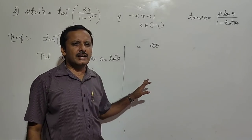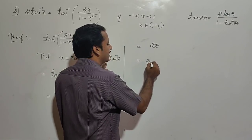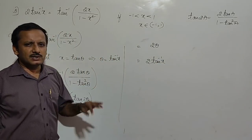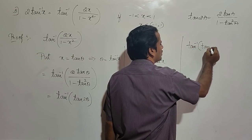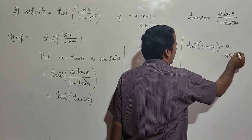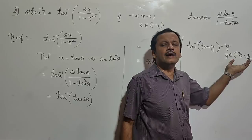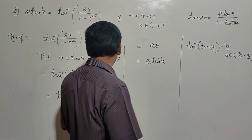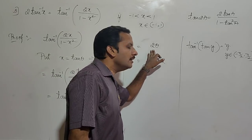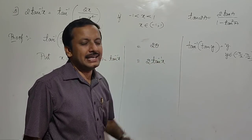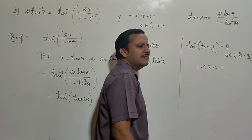Tan⁻¹(tan 2θ) = 2θ. However, the formula tan⁻¹(tan y) = y holds only when y belongs to the open interval (-π/2, π/2). So we must check that 2θ lies in this interval. Given x ∈ (-1, 1), we apply tan⁻¹ to get -π/4 < tan⁻¹(x) < π/4, meaning -π/4 < θ < π/4.